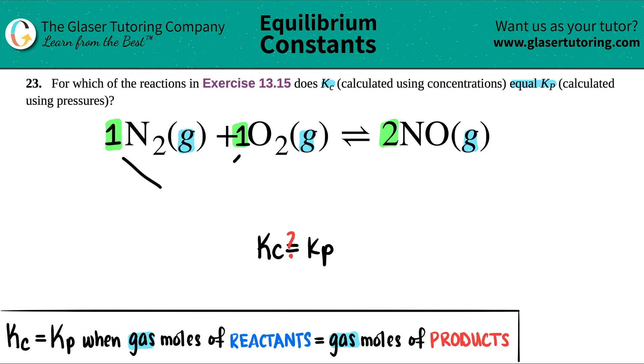And then here I have 2. So 1 plus 1 gets me 2. And does this equal 2? The total number on the reactant side has to equal the product side. Yeah. Since that's equal, the answer is yes.